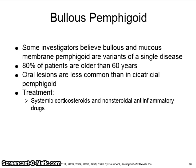80% of patients suffering with bullous pemphigoid are older than 60 years of age. Oral lesions are less common in bullous pemphigoid. Treatment usually involves systemic corticosteroids and nonsteroidal anti-inflammatory drugs. Unlike mucous membrane pemphigoid, in bullous pemphigoid, circulating autoantibodies are usually detectable.